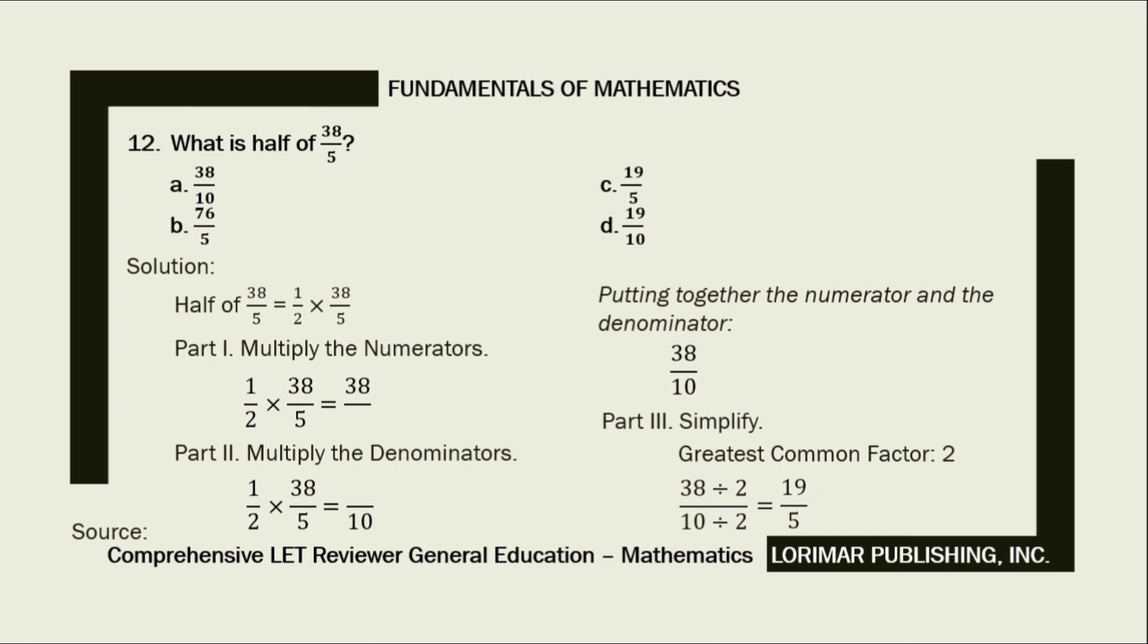Lastly, putting together again our numerator and denominator, our answer becomes 19/5. The correct answer is letter C, 19/5.